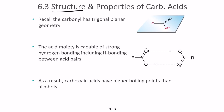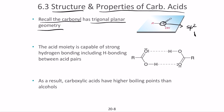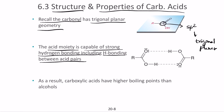Next, let's look at structure and properties of carboxylic acids. The carbonyl carbon has sp2 hybridization, giving it a trigonal planar geometry — it exists in a single plane. The acid moiety is capable of strong hydrogen bonding, both involving a lone pair and a hydrogen attached to highly electronegative atoms.